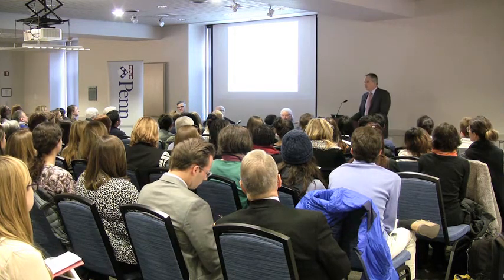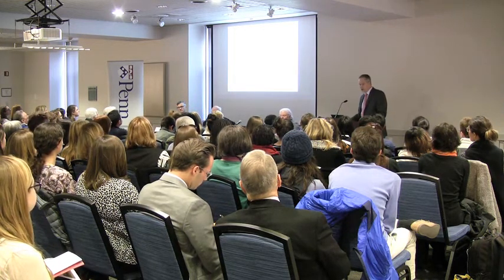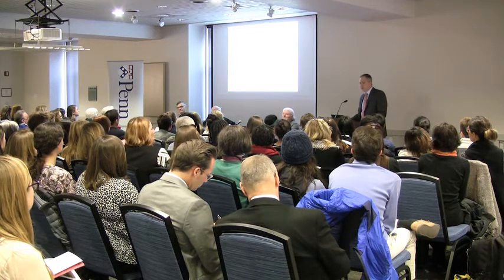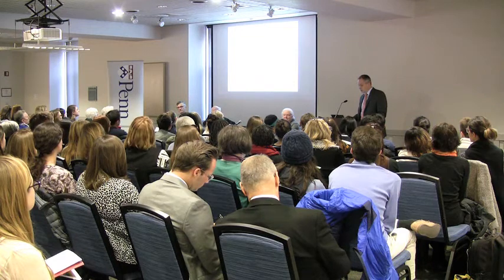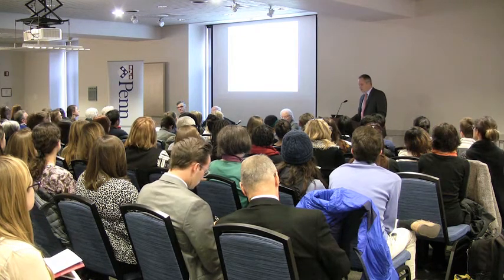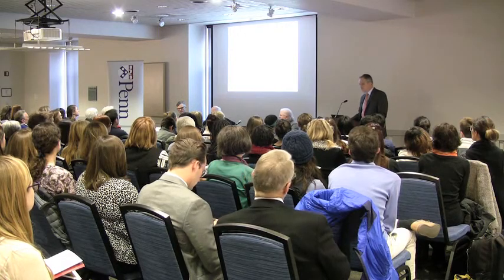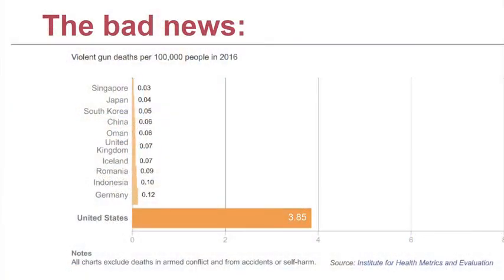There is some good news: relative to other countries, we are not the most violent. This infographic shows 3.85 gun deaths per 100,000 people per year in the US, as of 2016. El Salvador tops the chart at about 40 gun deaths per 100,000. But there is also bad news — relative to peer developed countries, we are a high outlier. Japan has 0.04 deaths per 100,000, and Germany has 0.12 deaths per 100,000.